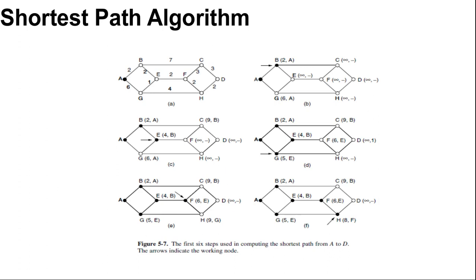In Dijkstra's algorithm, each node is labeled with its distance from the source node along the best known path. Initially all nodes are labeled with infinity. As the algorithm proceeds and paths are found, the labels may change. At last of our discussion in shortest path, I will show you an online animation for Dijkstra's algorithm.